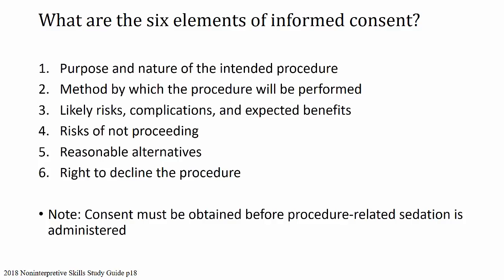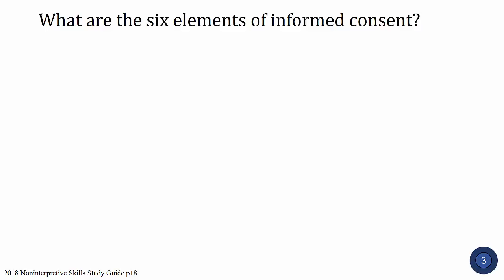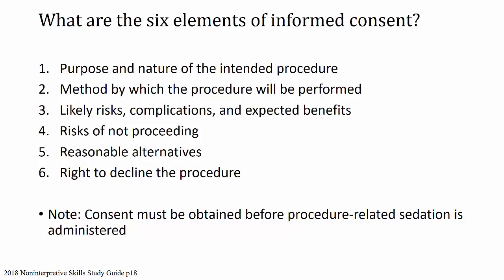Next question: what are the six elements of informed consent? The six elements are: the purpose and nature of the intended procedure; the method by which the procedure will be performed; likely risks, complications, and expected benefits; any risks of not proceeding with the procedure; any reasonable alternatives to the procedure; and the understanding that the patient has the right to decline the procedure. Consent must be obtained before procedure-related sedation is administered — you cannot get informed consent from a patient who already has sedation on board.